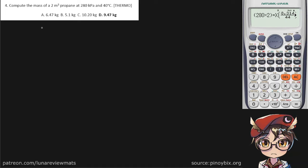Compute for the mass of a 2 cubic meter propane at 280 kilopascals and 40 degrees celsius. So we should write our givens first.